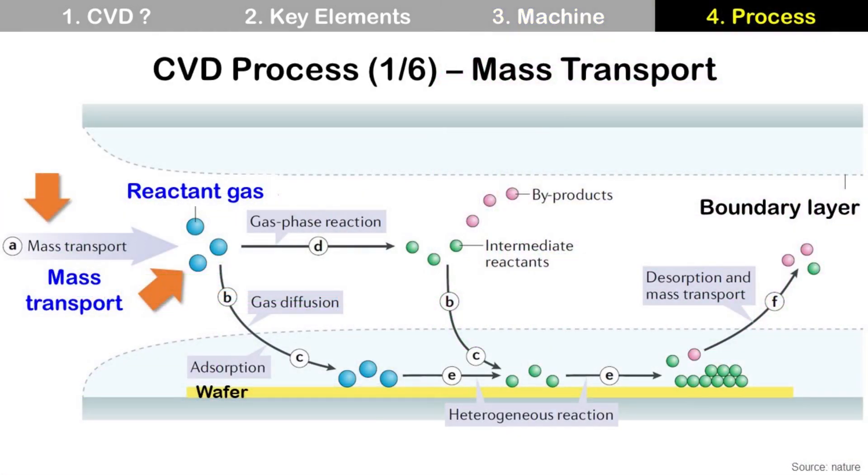This is a typical CVD process step, and we are seeing inside of reactor. Reactor can be a vacuum chamber for production or a tube for laboratory. Step A, mass transport. Reactant gases enter the vacuum chamber by first flow.